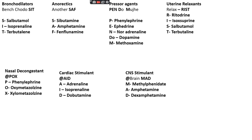To remember anorectic drugs, we use the mnemonic 'SAF': S for Sibutramine, A for Amphetamine, F for Fenfluramine.